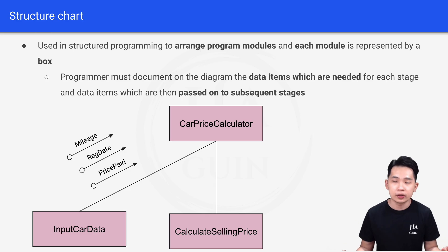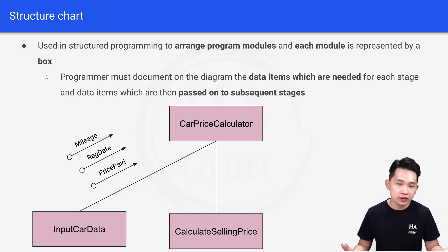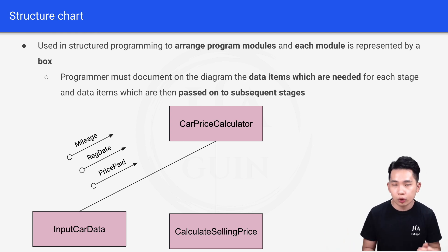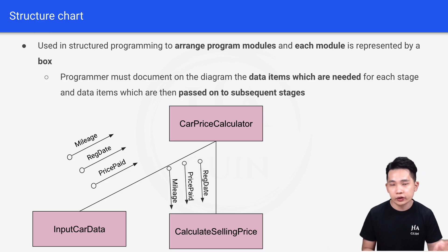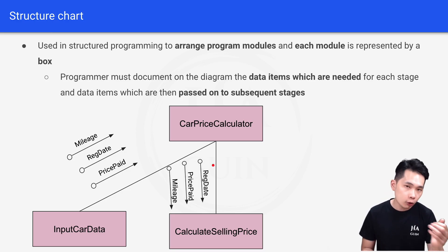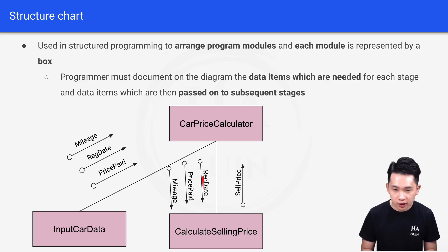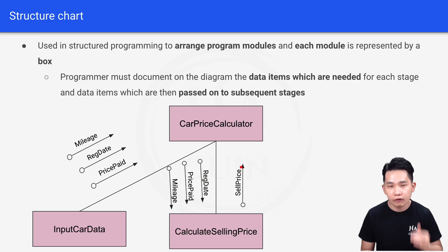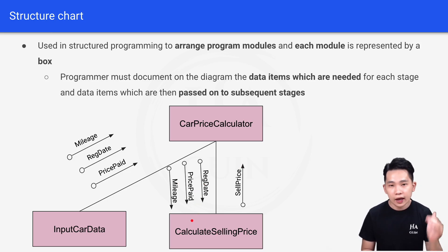This is a second-hand car dealer. You will buy the used car from the public, maybe improve it, clean it, or repair it, and then sell it at a higher price. So what would be the input for the Calculate Selling Price module? It will be the mileage, the price paid, as well as the registration date. The output for this module will be the sell price. This is the input arrow going into the module and the output arrow coming out, meaning you take these three data items and calculate the sell price.